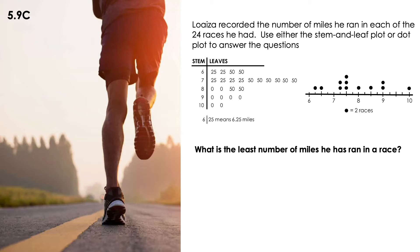So in this case, between 6 and 10, which one is the least? It's 6. And between 25 and 50 as a decimal, which one is the least? It's 25. So 6.25, according to our stem-and-leaf, is the least. Now let's analyze the dot plot on the right side.